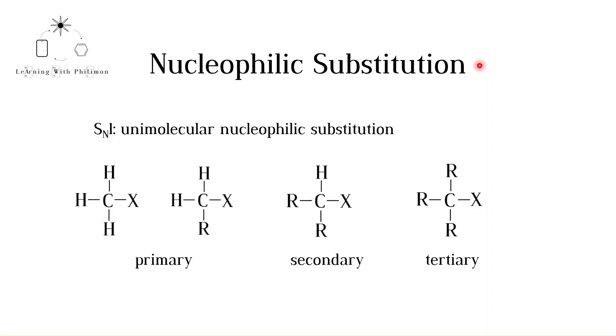Welcome to Learning with Philemon. In the previous video we saw how primary and secondary halogenoalkanes can undergo bimolecular nucleophilic substitution SN2 to form alcohols.